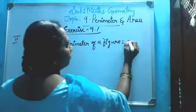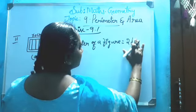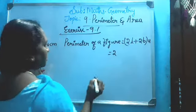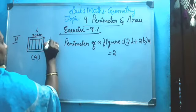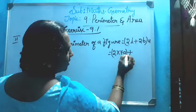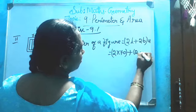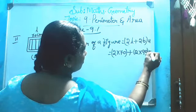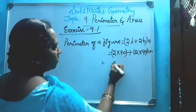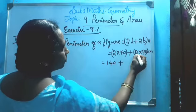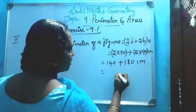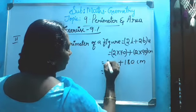How to find the perimeter? First write the formula: perimeter of a figure is equal to 2 into length plus 2 into breadth. Write the unit. Two into length - the length is 70 centimeters - plus 2 into breadth, 90 centimeters.